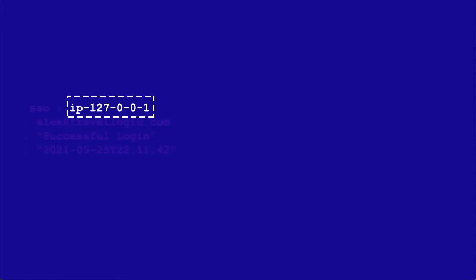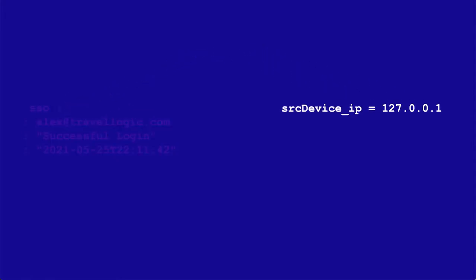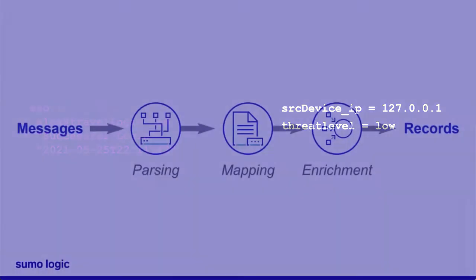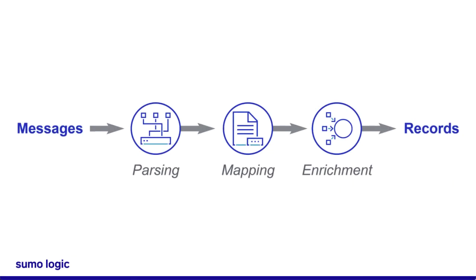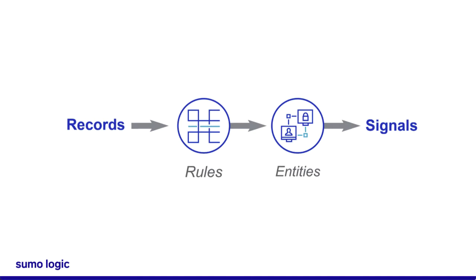Once the messages are parsed, mapped, and enriched, they become records. All messages that you forward from Sumo Logic to CSE become records — that might be millions of records. These records are then compared to rules. If a rule is triggered, an entity is extracted, a severity is assigned, and a signal is created.